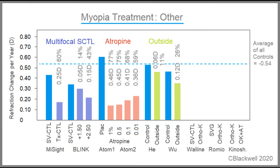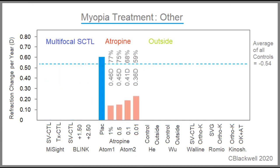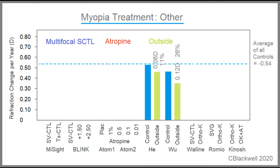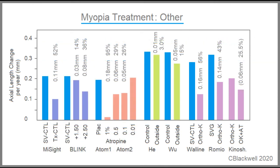These are the refractive results for the non-glasses studies. Multifocal soft contact lenses results depended on the type. Atropine showed a strong effect, but remember we talked about the long-term advantage of the low-dose choice. Outdoor exposure effect was only modest. Ortho-K showed a consistent effect. On the far right, the Kinoshita study is ortho-K versus ortho-K plus atropine. Axial length results are the same, except for the low concentration of atropine, which we mentioned before.